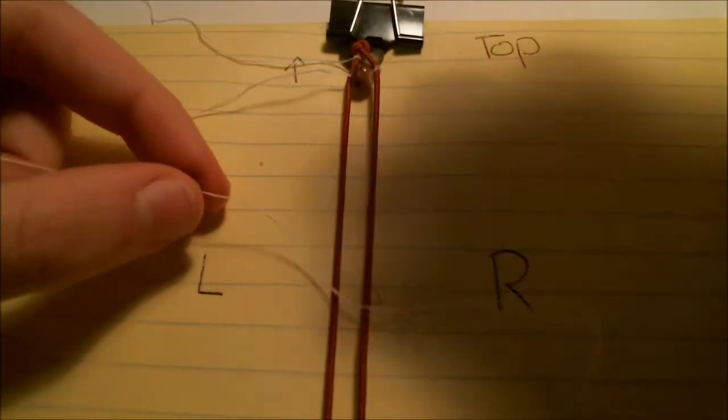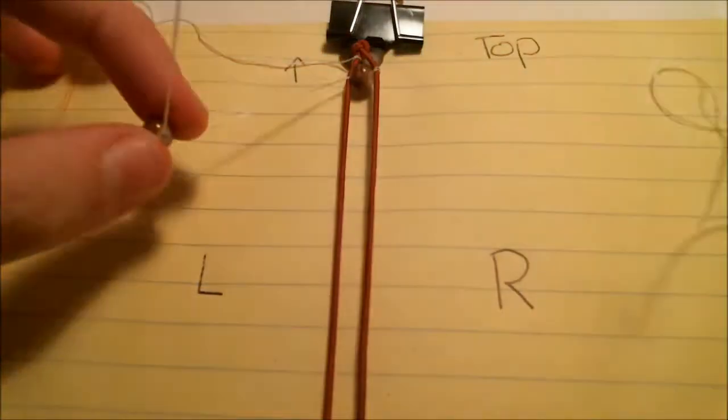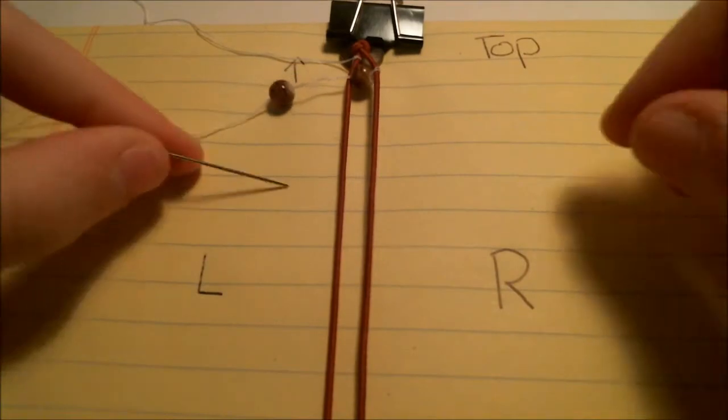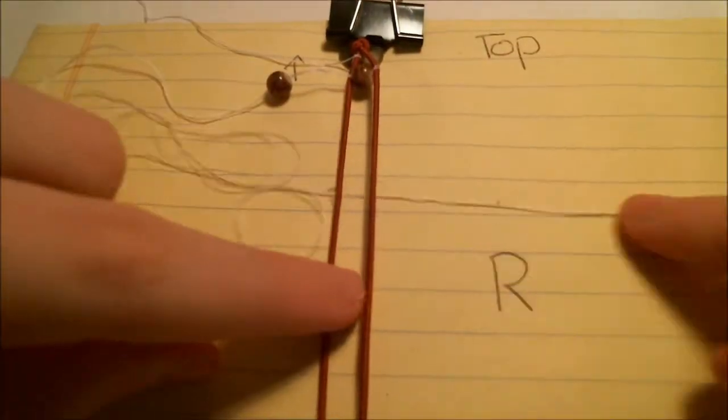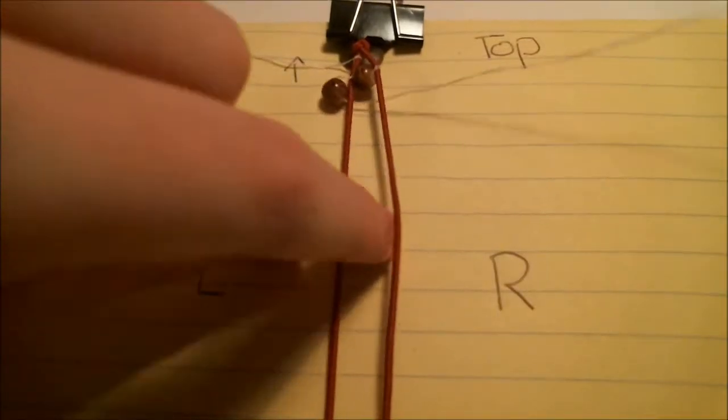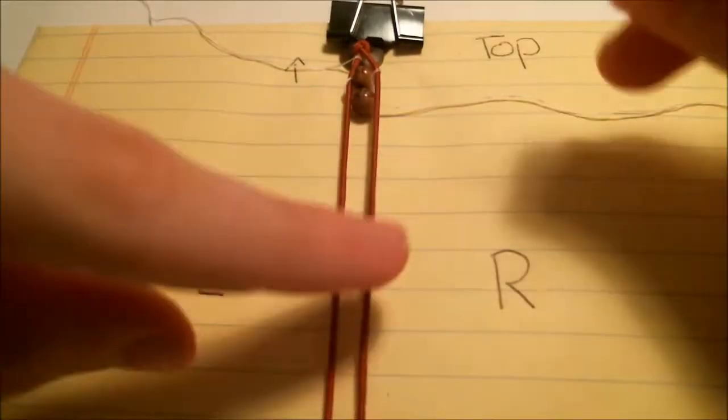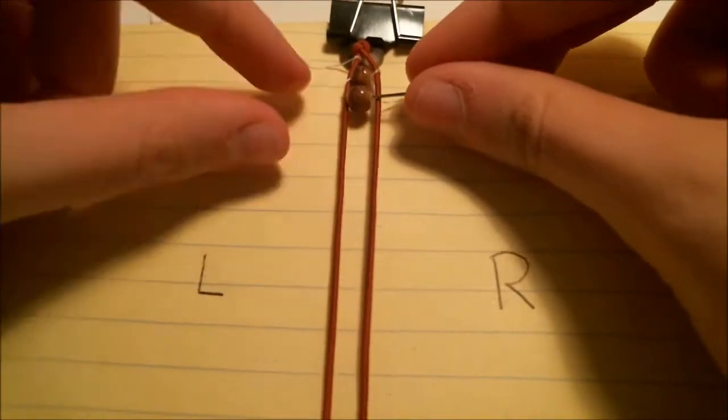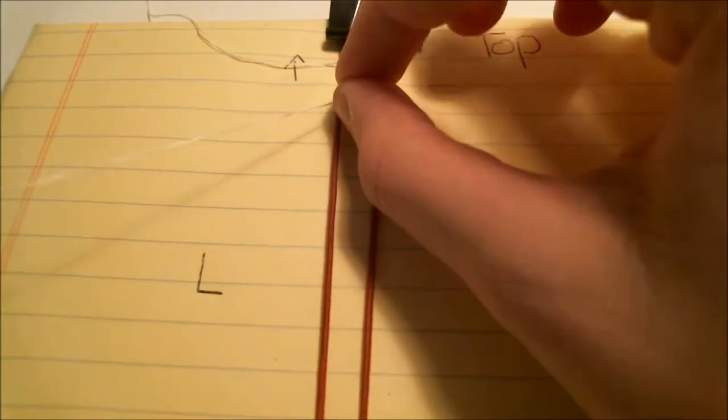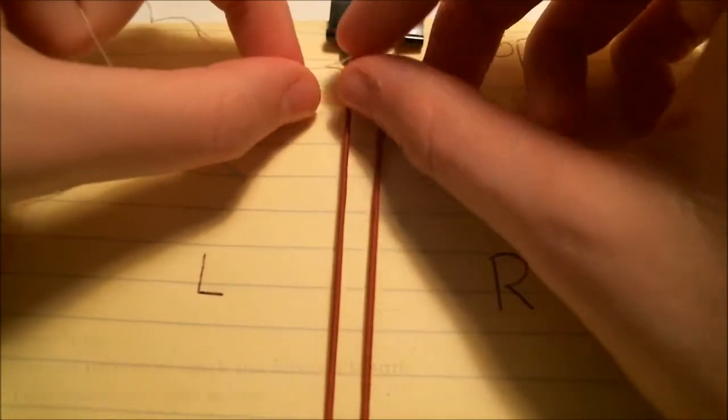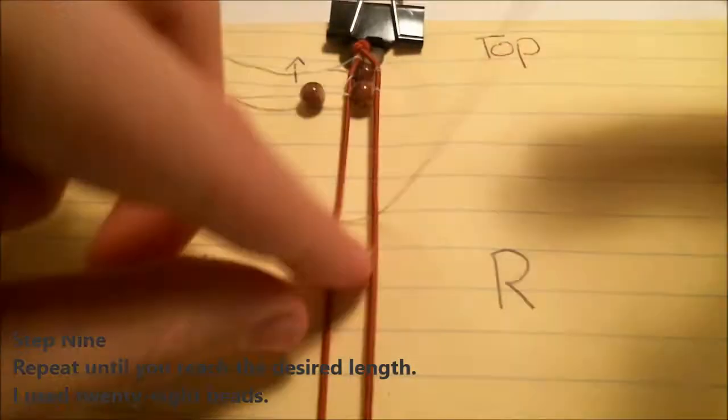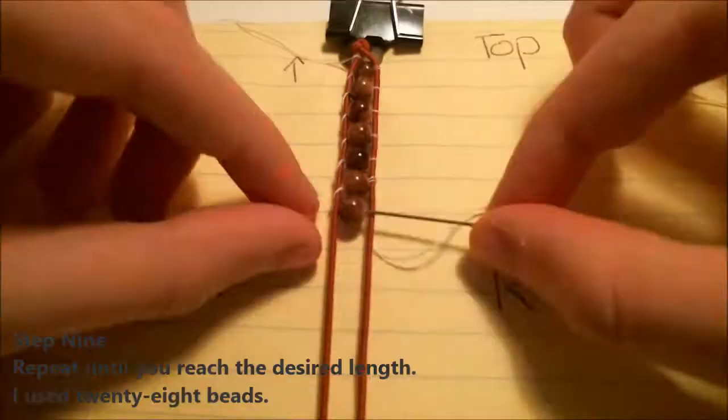Repeating again from the left side, slide on a bead onto your needle. Take the needle, go under both pieces of elastic. Make sure the bead is in between the two. Going over the pieces of elastic, thread your needle through the bead. Repeat until you have the desired length. I use 28 beads.